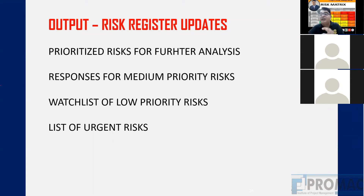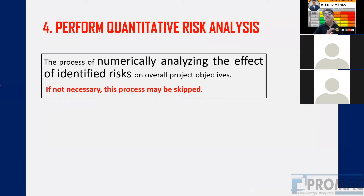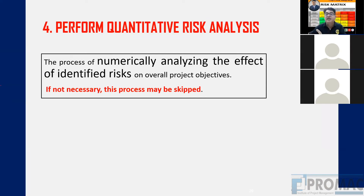We do not perform numerical analysis for every risk — only for high-priority risks. For medium-priority risks we find responses, and low-priority risks go on the watch list. In quantitative analysis, we calculate EMV — probability multiplied by impact — and use this to correct the cost baseline and schedule baseline. This process may be skipped if not necessary; after qualitative analysis we can move directly to risk responses.